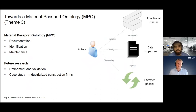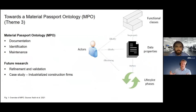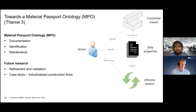One thing we've already started on is creating and moving towards a material passport ontology. Using ontology-based data integration, we effectively combine data and information flows from multiple sources across the different actors and stakeholders in the construction life cycle. We're thinking about the relationship between actors, functional classes, data properties, and life cycle phases. We wrote a conference paper recently on our proposed ontology, which can be useful for documentation, identification and maintenance of assets at the specific product level, building level, and ultimately possibly at the city level.